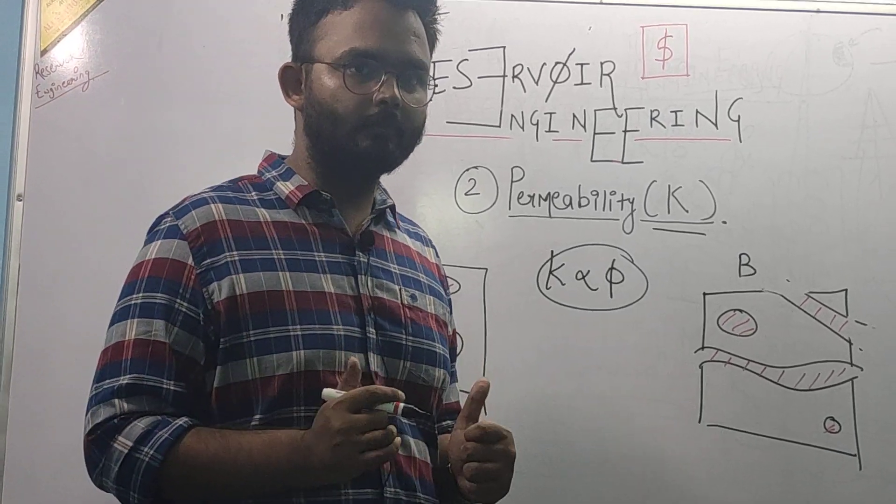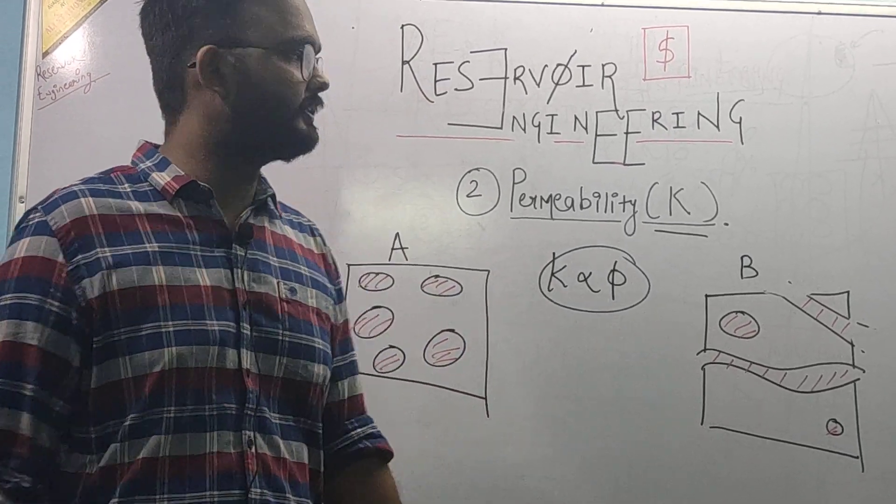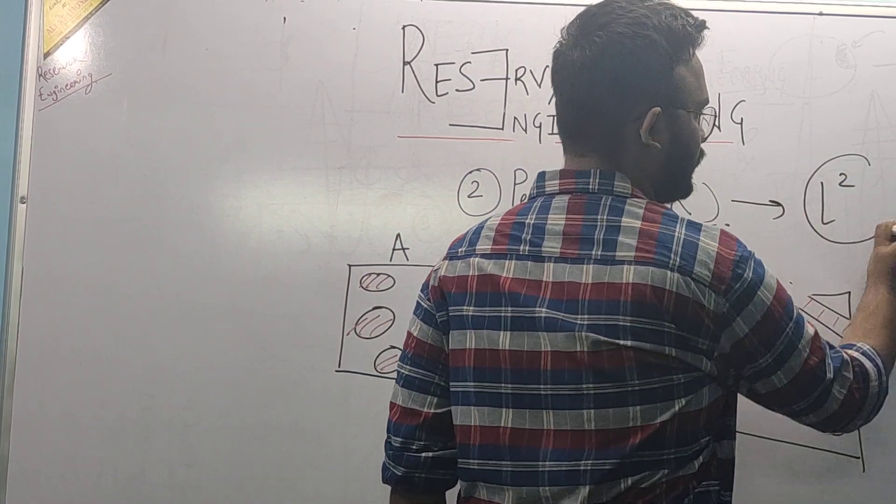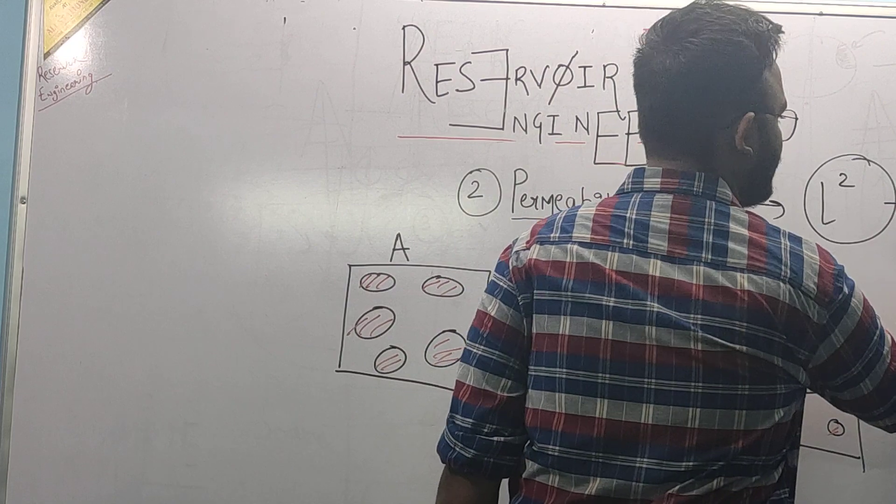So, this is the fundamental importance of permeability, the fundamental definition of permeability. Talking about physics and dimensions, permeability has a dimension of L2. Its SI unit is meter square.